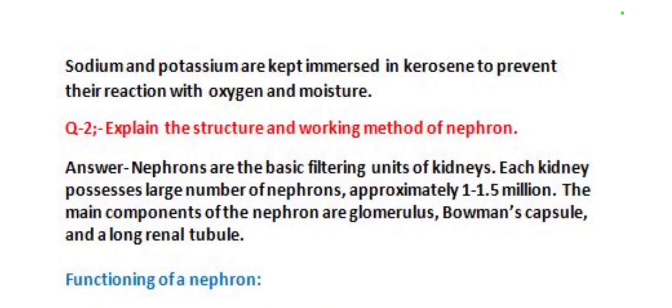Our next question is: explain the structure and working method of nephron. Nephrons are the basic filtering units of kidneys. Each kidney possesses a large number of nephrons, approximately 1 to 1.5 million. The main components of the nephron are the glomerulus, Bowman's capsule, and a long renal tubule. Now we are going to discuss the functioning of a nephron.